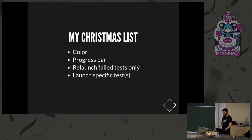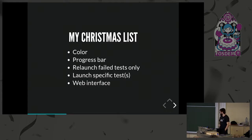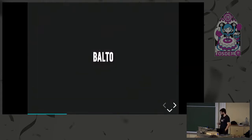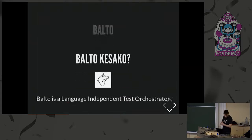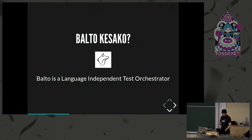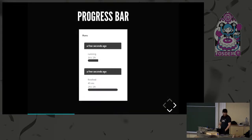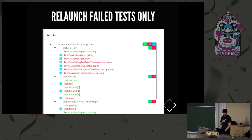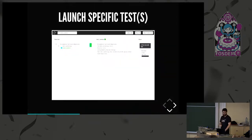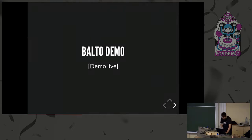Also on the list: launching specific tests — you might know exactly which test you want, either a failing one or one that should be failing but isn't. And finally, a web interface. So what I did with this Christmas list is turn it into an interface. Let's meet Balto. Balto is a language-independent test orchestrator. It checks all of the wish list: colors, progress bar, relaunching failing tests only, launching specific tests. And if you don't trust me, I'll show you with a live demo — wish me luck.